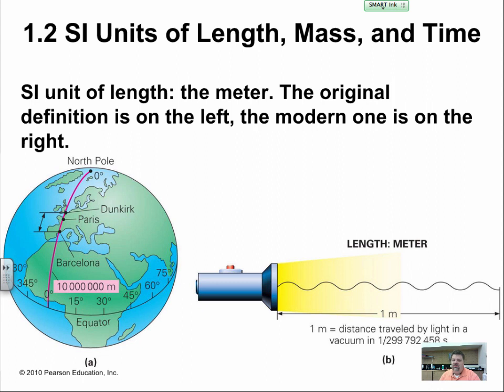Now we use the amount of time. If you take 1 over 299,792,458 seconds, that's how far a photon can travel is exactly 1 meter.